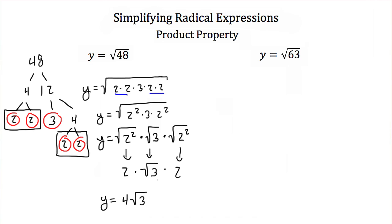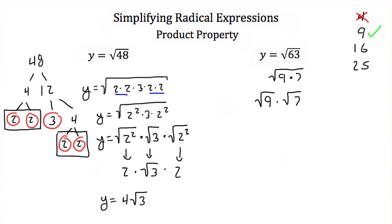The other way of doing this is to look for perfect squares that are divisible into our number. Here we have y is equal to the square root of 63. Easy perfect squares we know are 4, 9, and 16. We look for one that divides evenly into 63. We cannot divide 4 into 63, but we can divide 9 — 63 is 9 times 7. So we write it as the square root of 9 times the square root of 7. The square root of 9 is 3, and the square root of 7 is prime, so the answer is 3 square roots of 7.